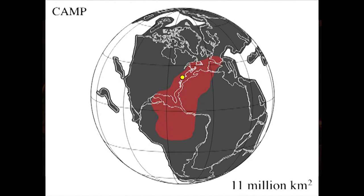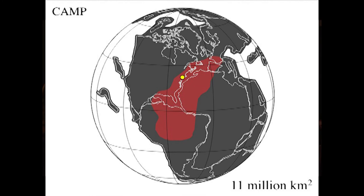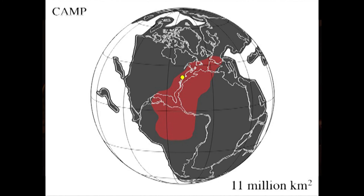That sounds like a lot — but how big is that really? That's one-third the area of the moon. It's larger than the United States. That's how big it is. That's one of the largest series of eruptions on Earth that's ever happened. Do you think that might have been a little bit disruptive?